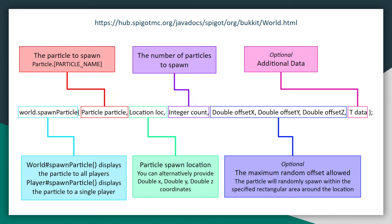Here on screen you can see the method call that will actually spawn in our particle. There are two ways to use it: you can either call the spawn particle method on a world object, or you can call it on a player object. If you call it on a world object it will display the particle to all of the players on the server, and if you call it on a player object it will only display it to that particular player.